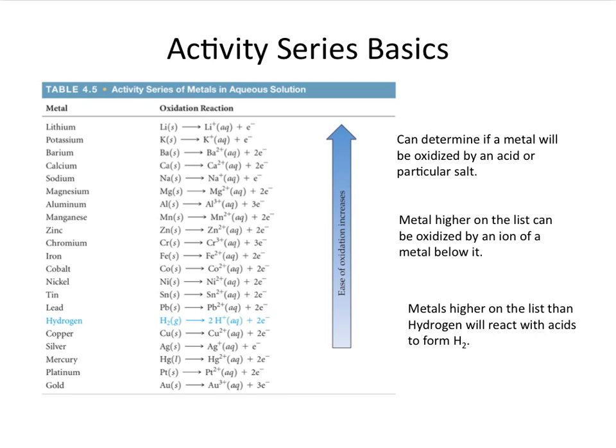And as you can see in this table right here, we have a list of metals, as well as hydrogen here. And basically what this table tells us is how readily or how easily that specific metal is oxidized. So the metals that are at the top of the list are the most easily oxidized, and the metals at the bottom of the list are the least easily oxidized.